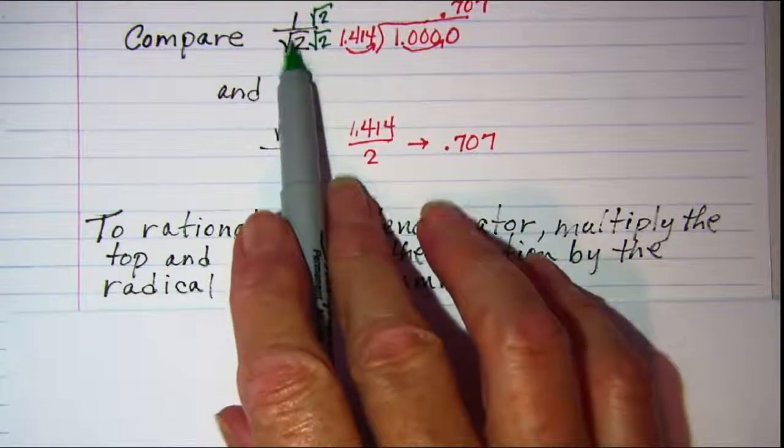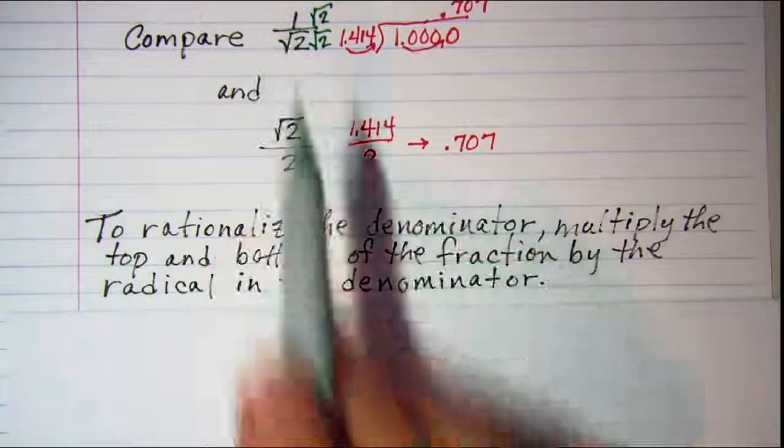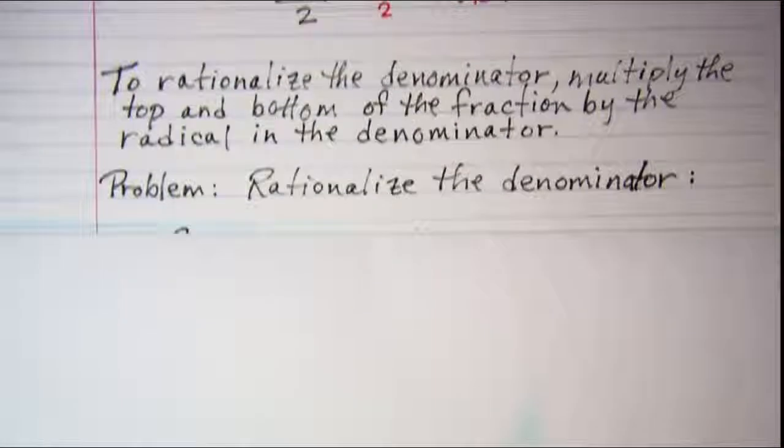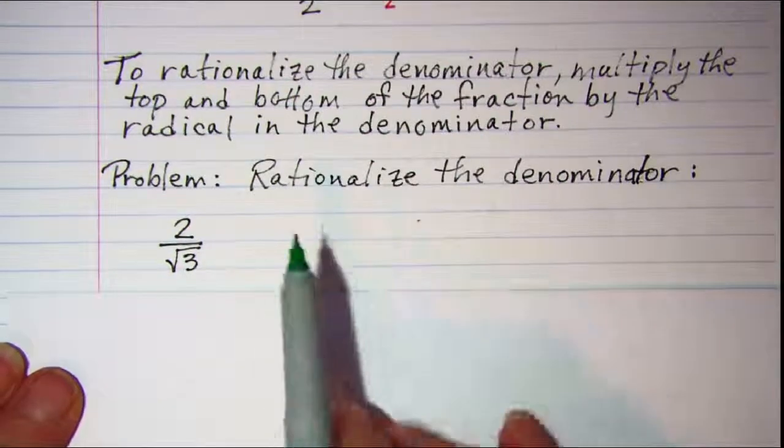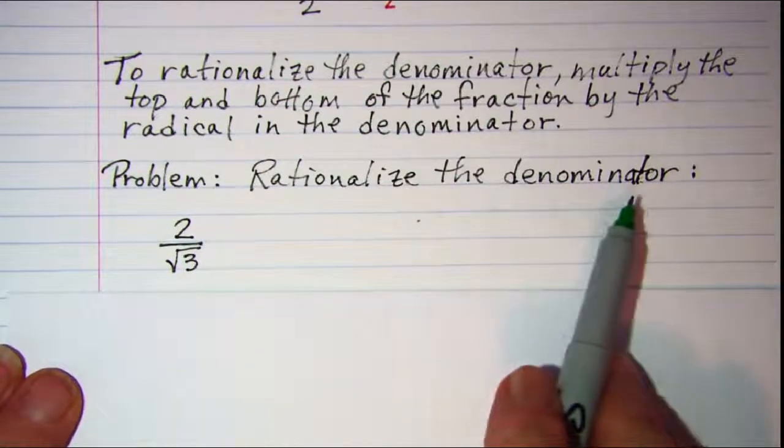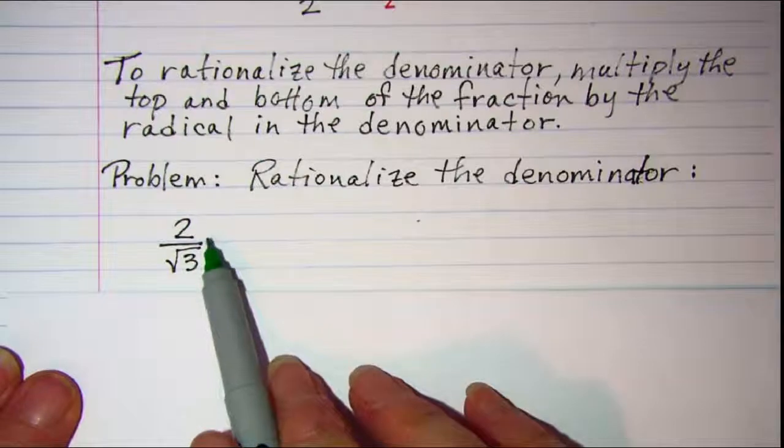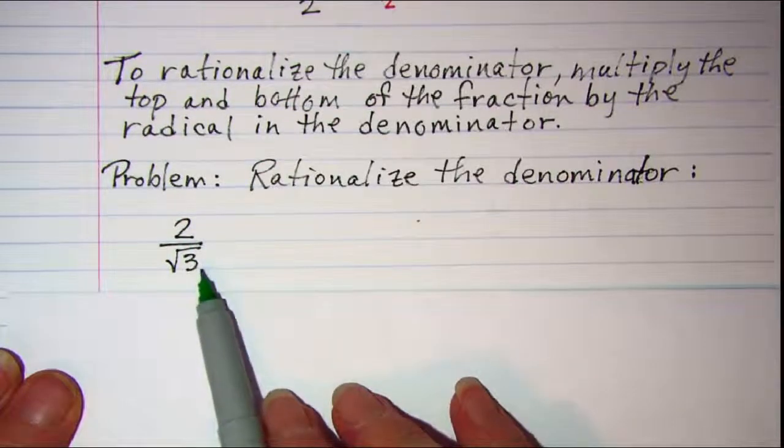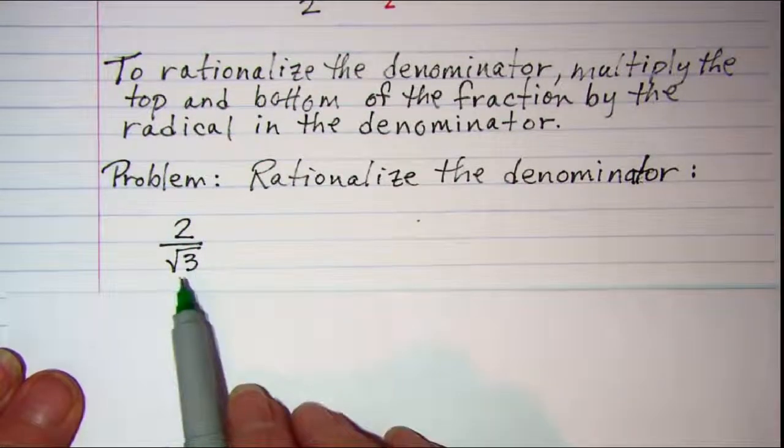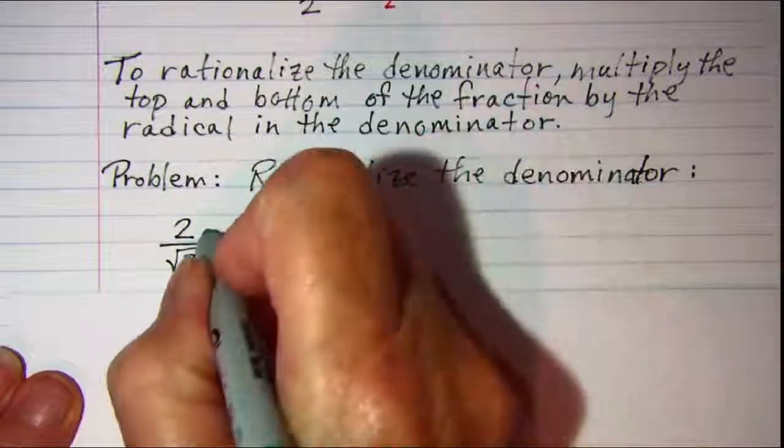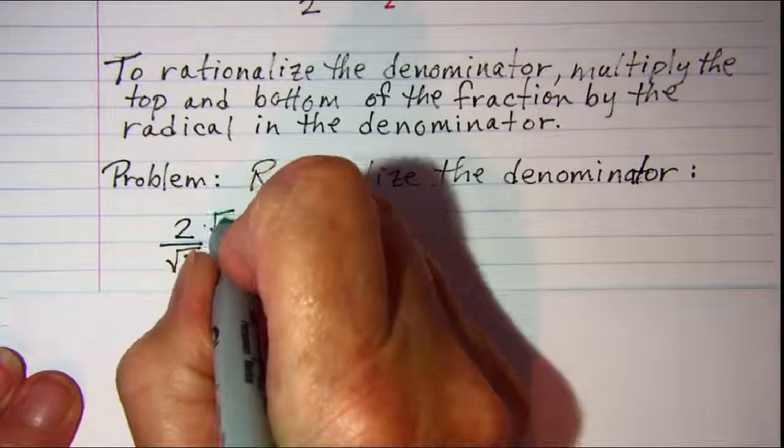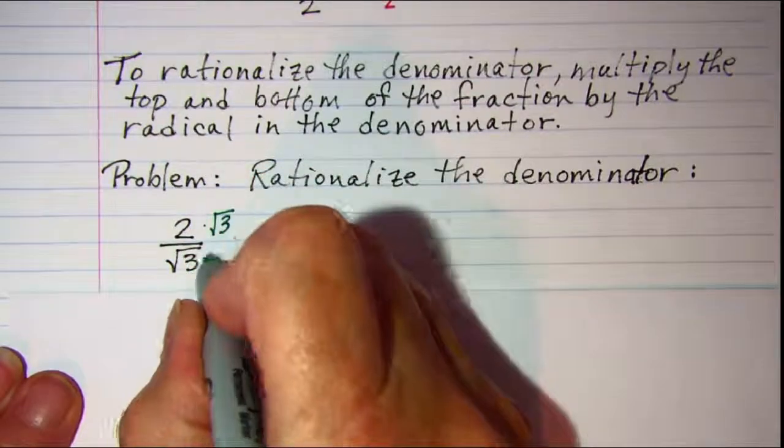This one needs to have the denominator rationalized. Let's do a few examples. Our problem is to rationalize the denominator, and our first example we have 2 over the square root of 3. So the radical that's in the denominator is root 3. I'm going to multiply top and bottom of that fraction by root 3.